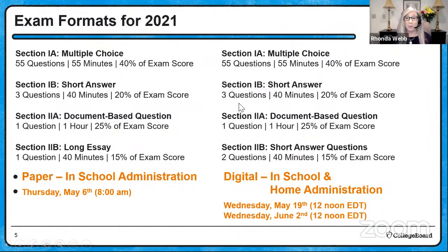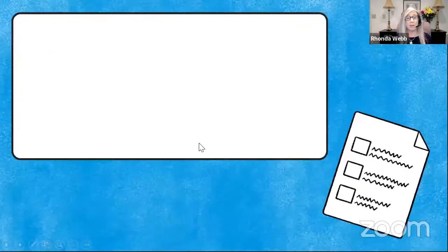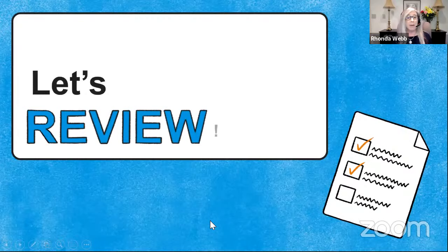On exam format: if you're taking the in-paper version on May 6th, you'll have the traditional exam with multiple choice, short answer, a break, then the two essays — DBQ and LEQ. If you're taking the digital version, you get the same 55 multiple choice questions in 55 minutes, then a short answer session, then the document-based question. But instead of the LEQ, you'll have a second set of short answer questions.